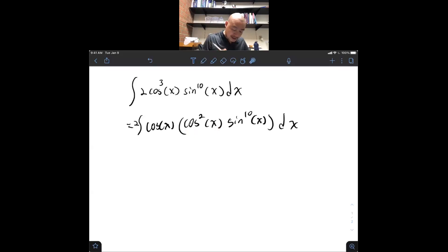Now, this cosine squared of x, that's rewritable as 2 cosine of x, 1 minus sine squared of x, using the Pythagorean identity, sine to the 10th x, dx.